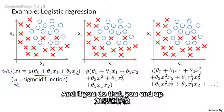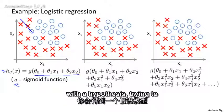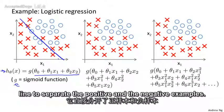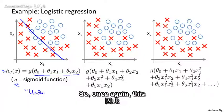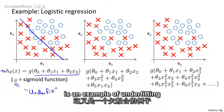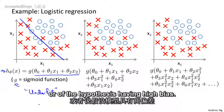And if you do that, you end up with the hypothesis trying to use maybe just a straight line to separate the positive and the negative examples. And this doesn't look like a very good fit to the hypothesis. And so, once again, this is an example of underfitting or of a hypothesis having high bias.